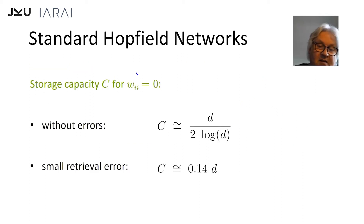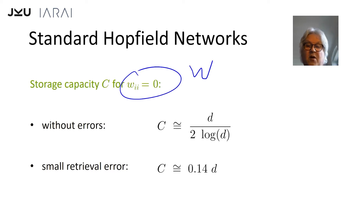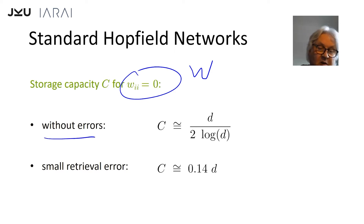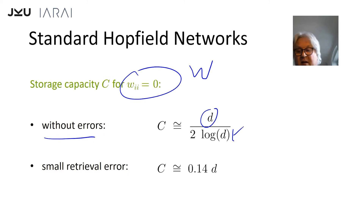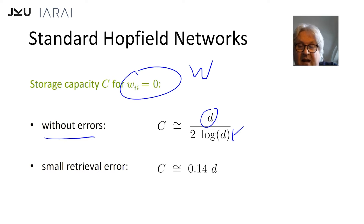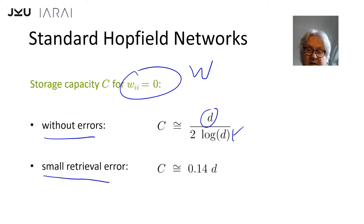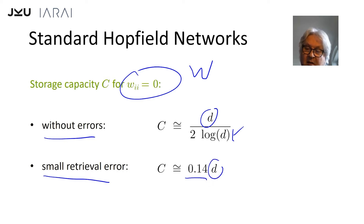Standard Hopfield networks, where the diagonal of the weight matrix W is set to zero, have a linear storage capacity. Without errors it's d divided by log d — where d is the dimension of the patterns — or if you allow small retrieval errors it's 0.14 times d. So the storage capacity is linear in d.